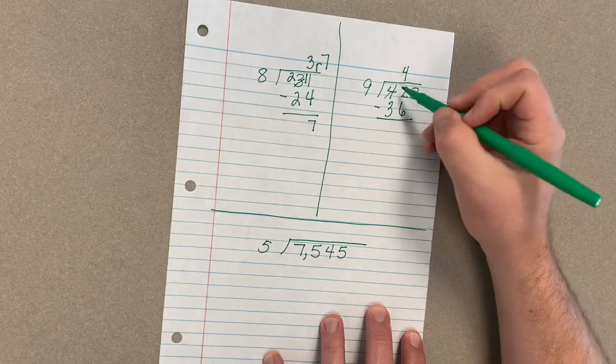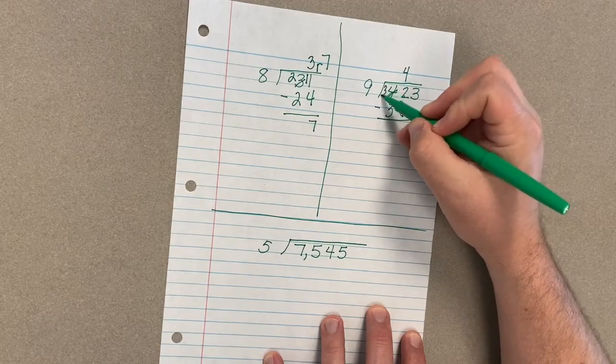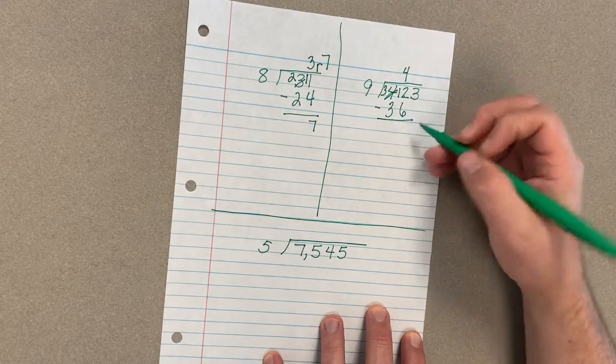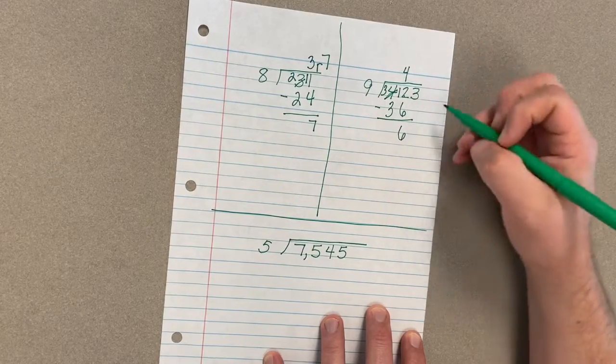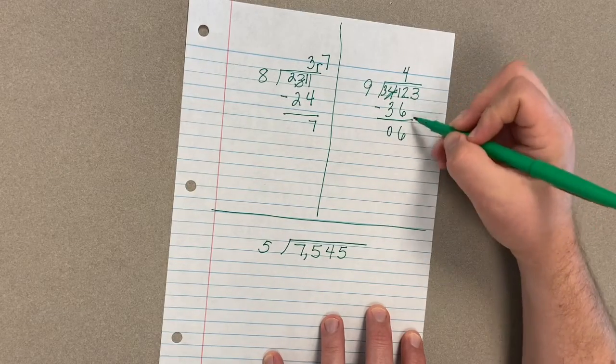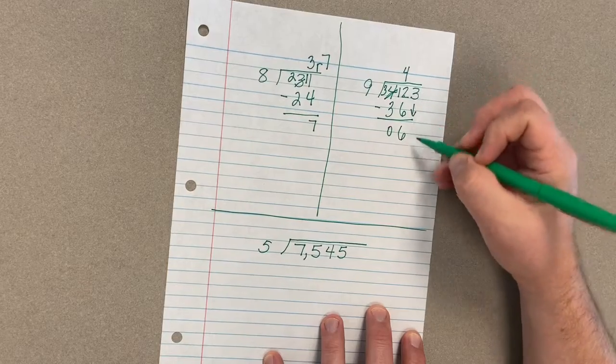Subtract these out. Again, I'm going to have to borrow. 12 minus 6 is 6, 3 minus 3 of course is 0.